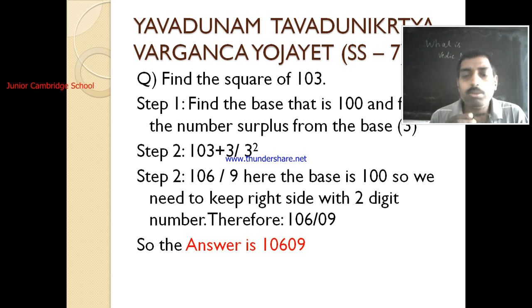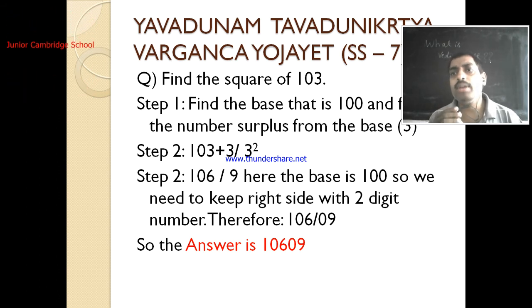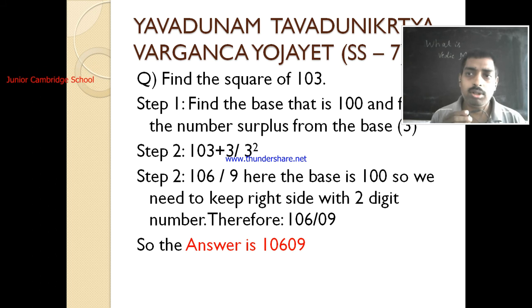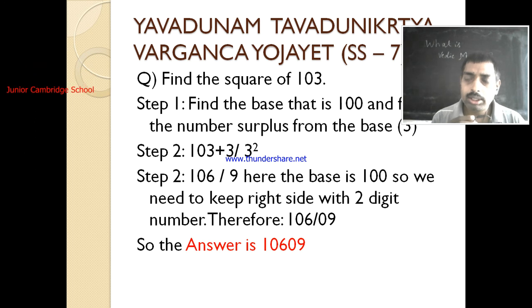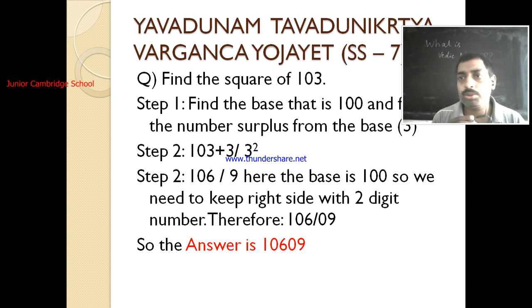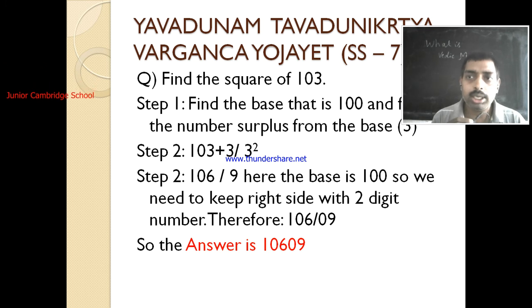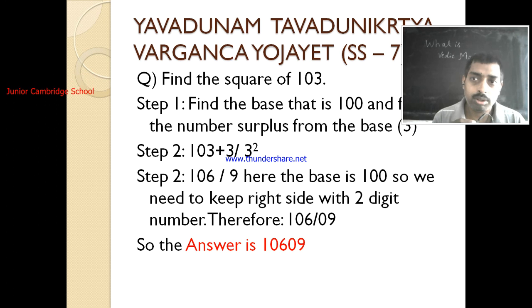In the second step, we take 103 plus the difference, which gives us 106, and then we square the difference. The difference is 3, so 3 squared equals 9. So the first part of the answer is 106. Since our base is 100, which contains two zeros, the right side of the answer must always be two digits. So the answer is 10609.